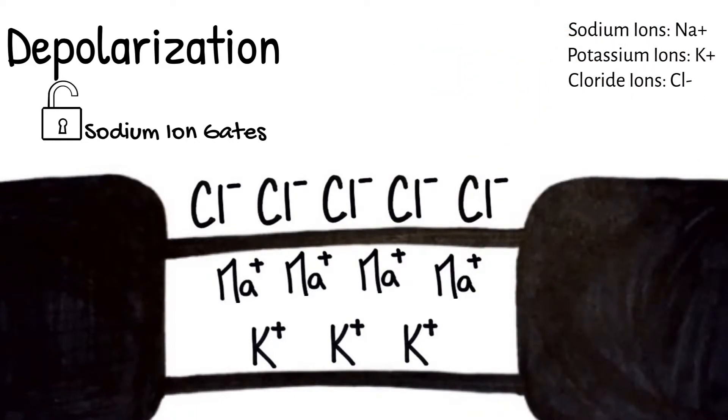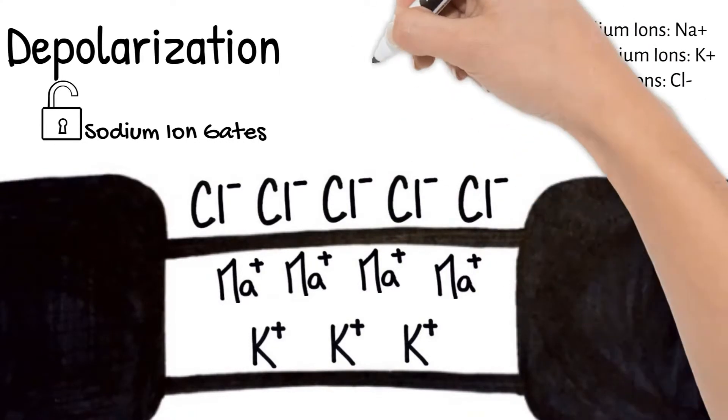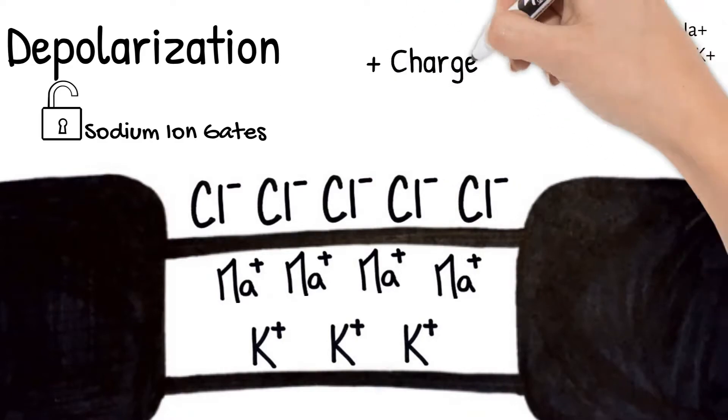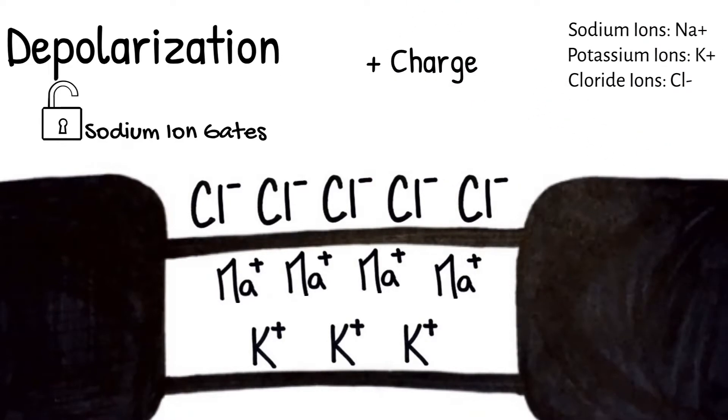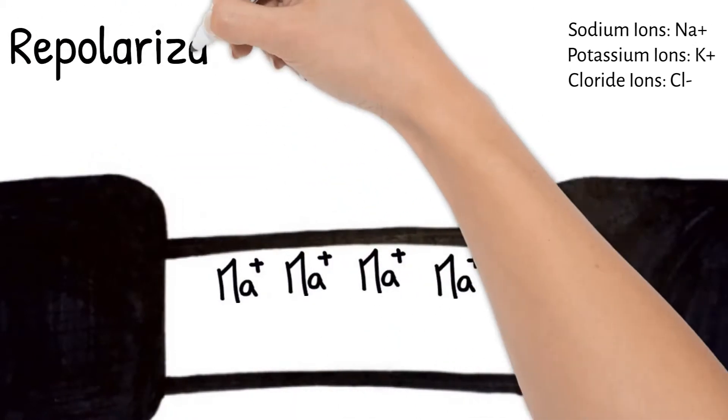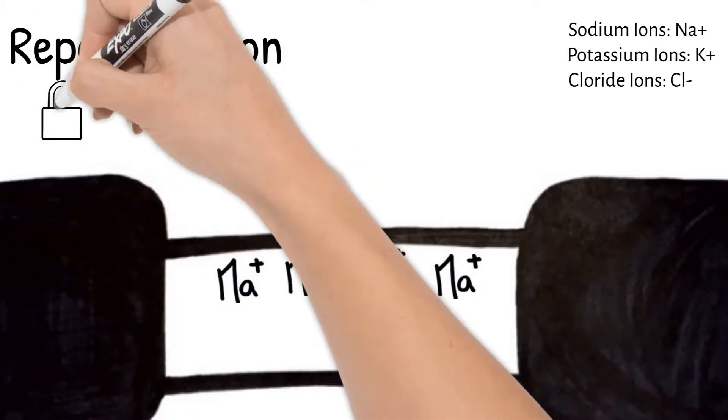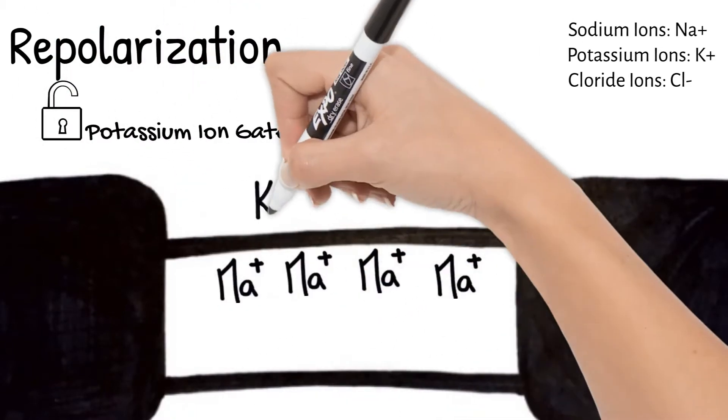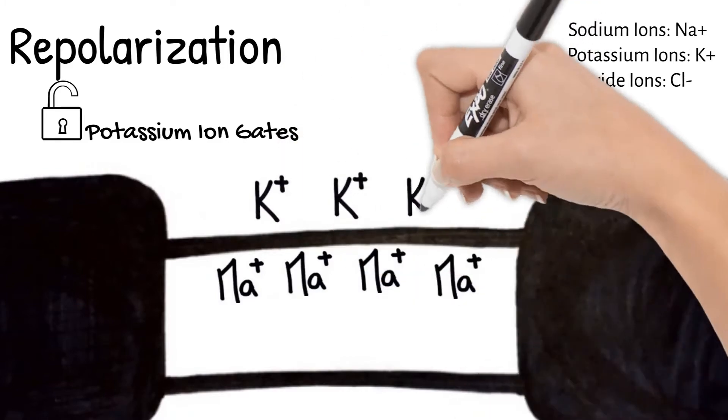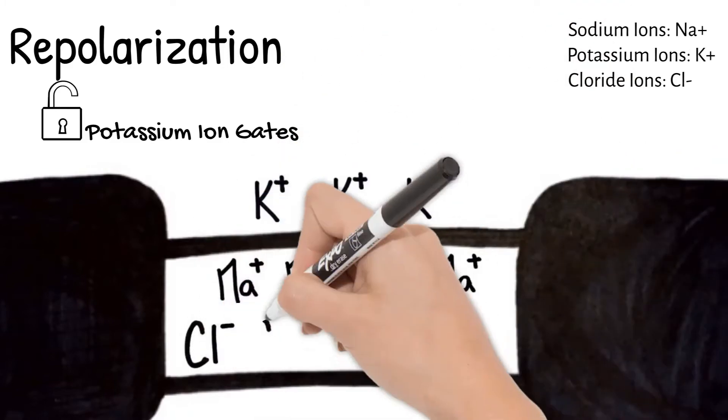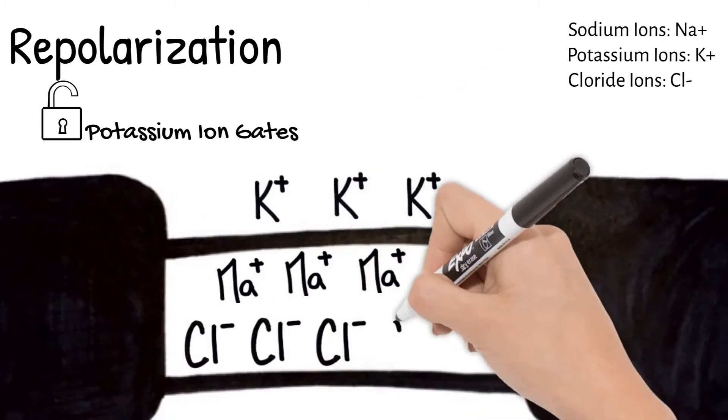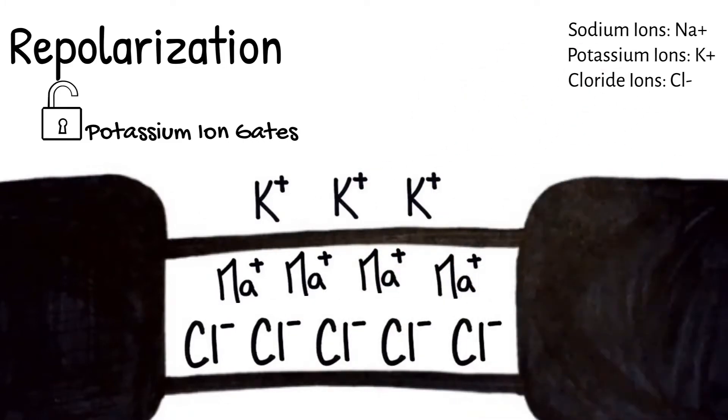With these changes of ion location, it is now positive inside the axon at about positive 40 millivolts. Repolarization happens next, and that happens when the sodium gates close and potassium gates open. Potassium flows out of the cell while that chloride will flow in. So now the neuron has a negative charge again, which is correct for a resting neuron.